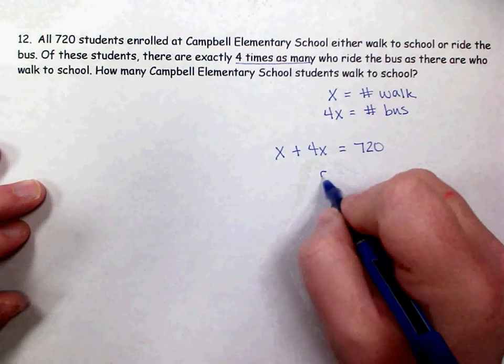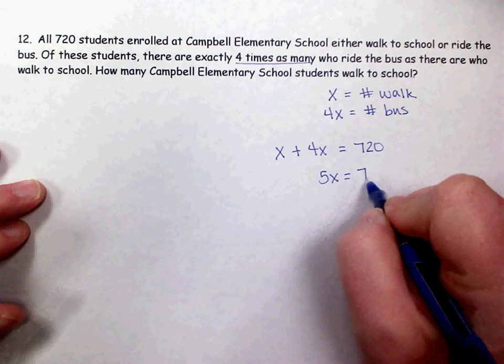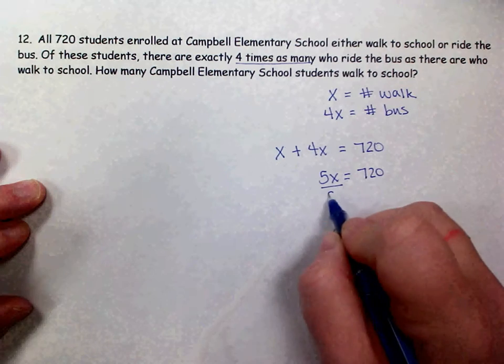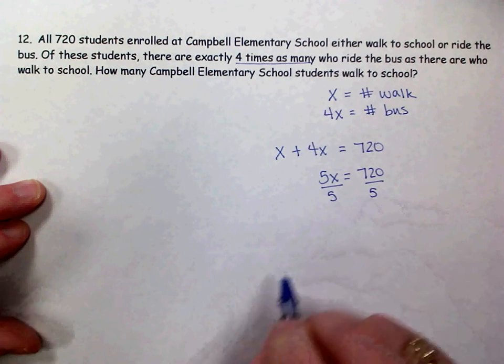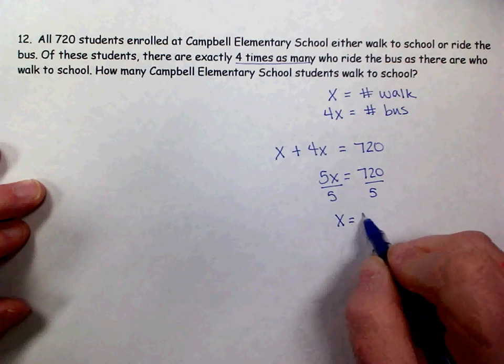So all I have to do is add my like terms to get 5x equals 720, divide both sides by five, and we get x equals 144.